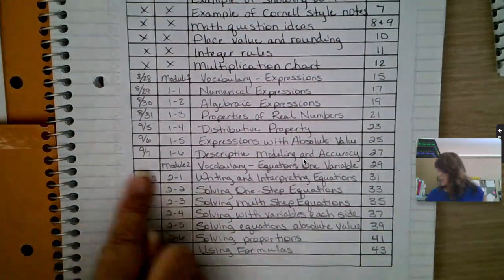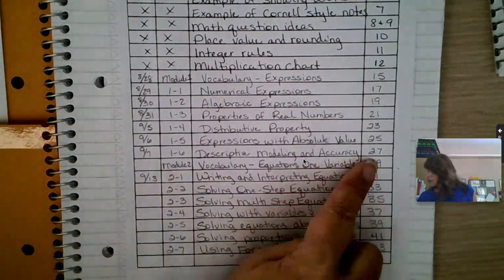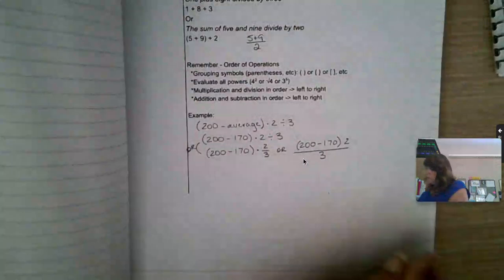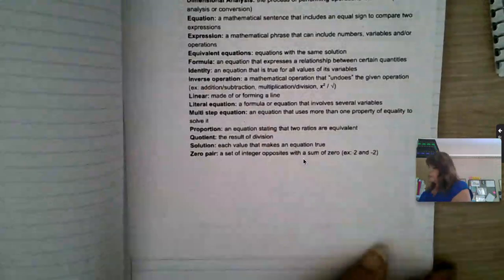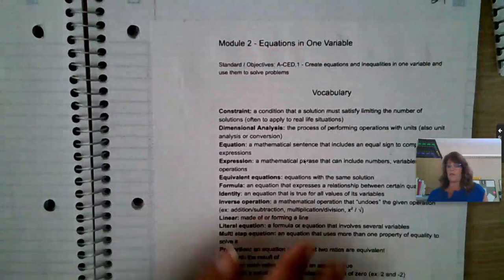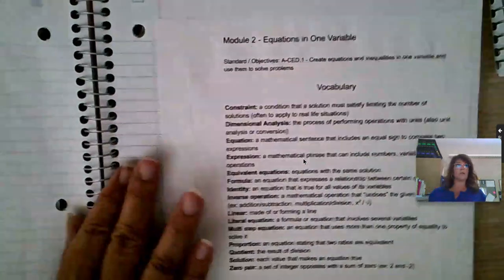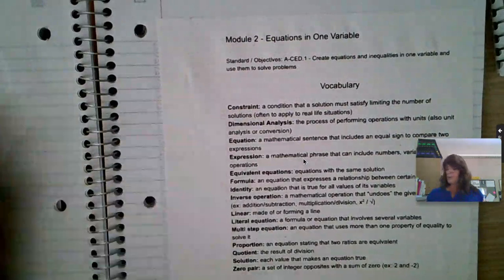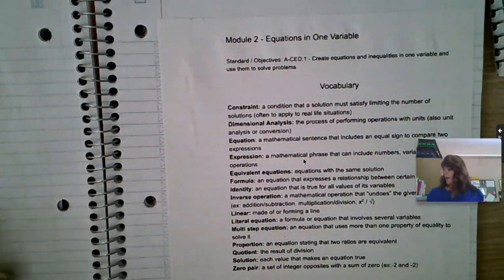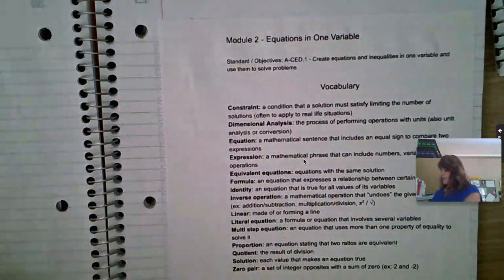So, noting that module one starts on page 29, I'm going to scoot way over there, knowing that I can just flip over to page 29, and there's my first page, vocabulary, and the side page is blank. Maybe it'll get used for opener problems, don't know, but there's my first page to start.